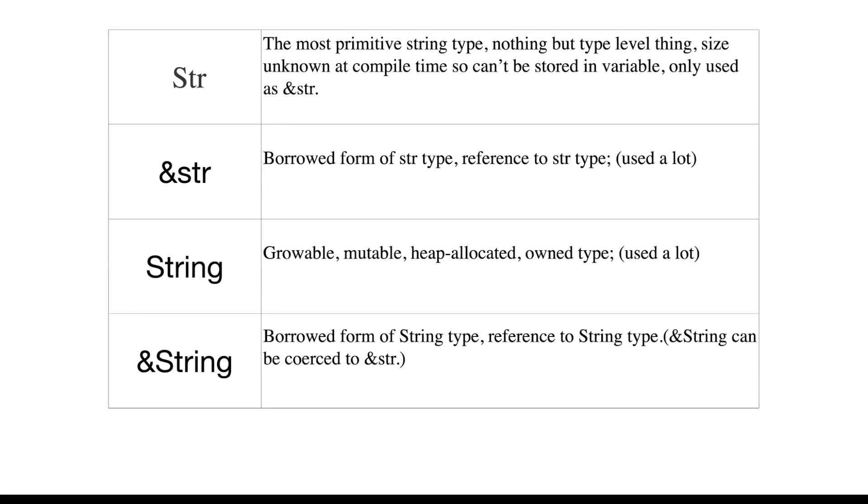str type is the most primitive string type, nothing but a type level thing. Size unknown at compile time so can't be stored in a variable, only used as &str.